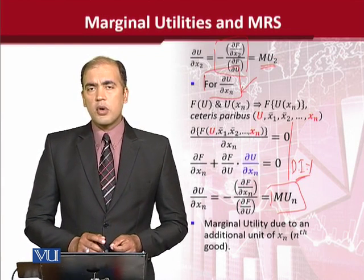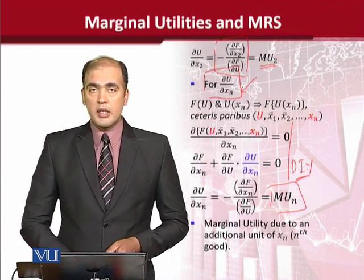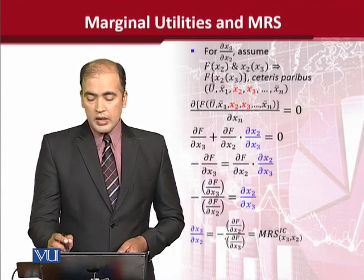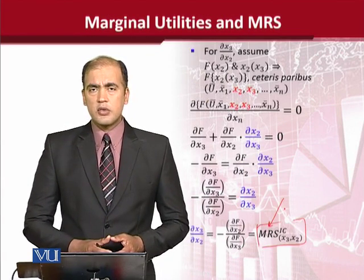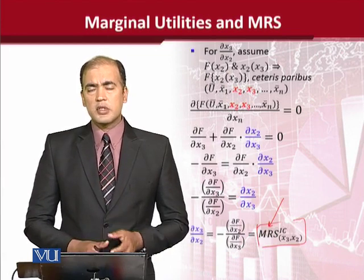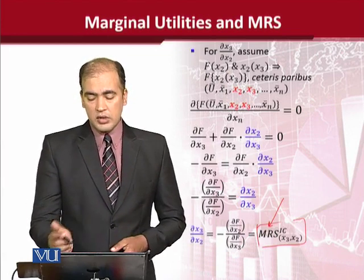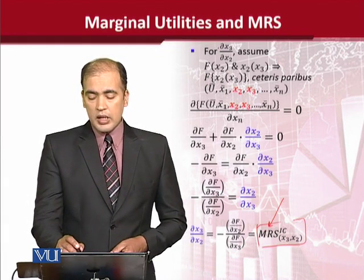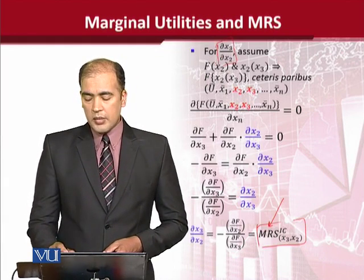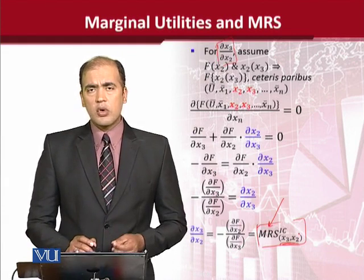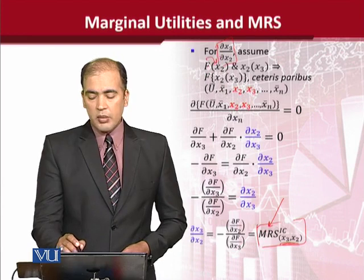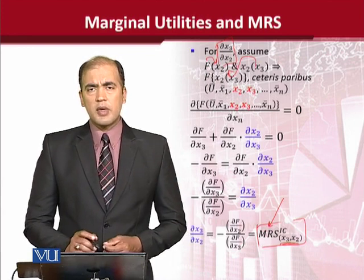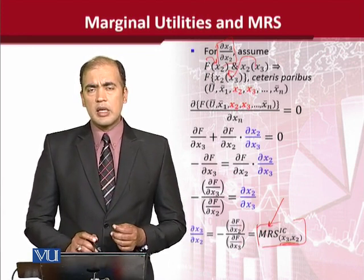I would like to focus more on something else, and that is on the next slide. Once we are interested in calculating the MRS — the marginal rate of substitution — of any indifference curve from such an implicit function, for example if we want to calculate MRS between two goods x2 and x3, then f will primarily depend on x2, and x3 will cause x2. So in this way there will be a direct and an indirect relationship.